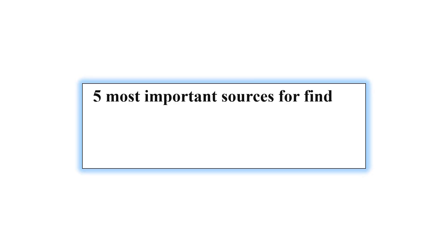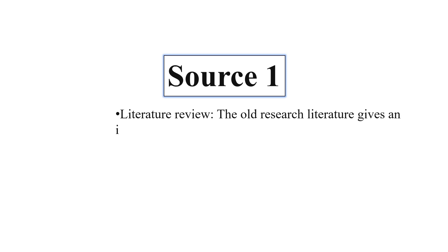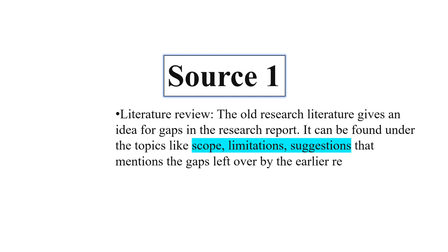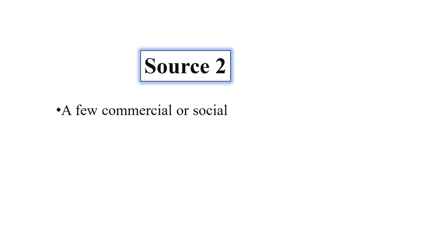There are five most important sources for finding the research gap. Source number one is the literature review. Old research literature gives an idea of the gaps in a research report. It can be found under topics like scope, limitations, and suggestions, which mention the gaps left over by earlier researchers.